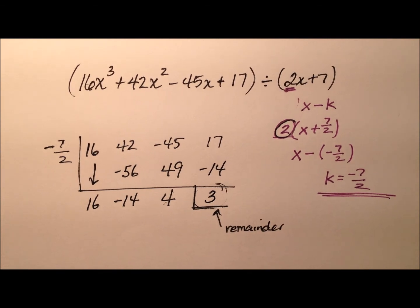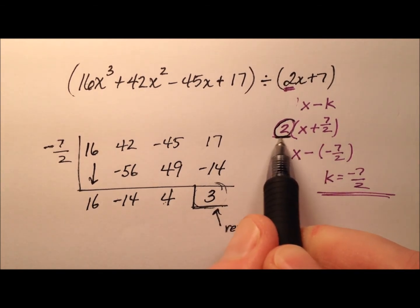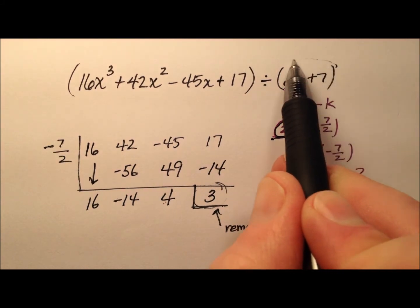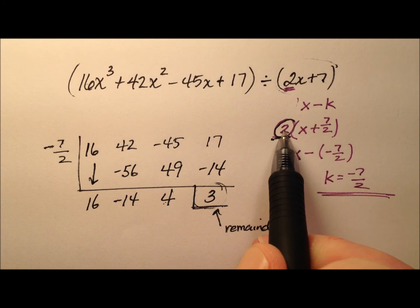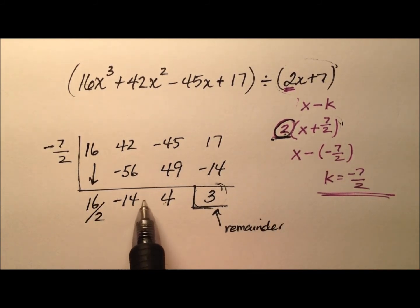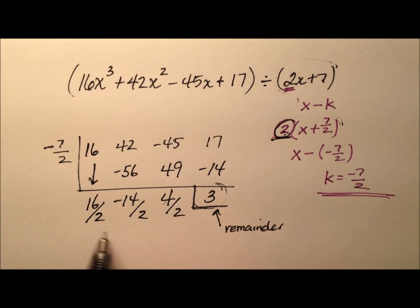But before I build my polynomial back up, I did factor this 2 out. So what this really means is I was supposed to divide by 2x plus 7. But I factored the 2 out first and just divided by the leftovers. So I still need to divide by this 2.